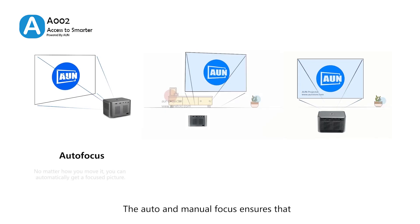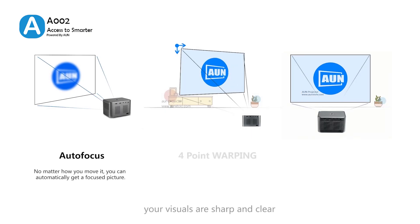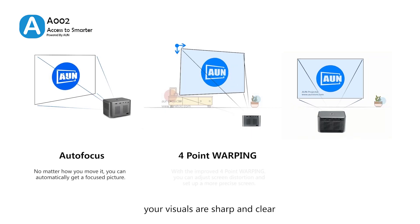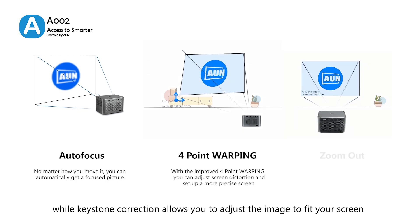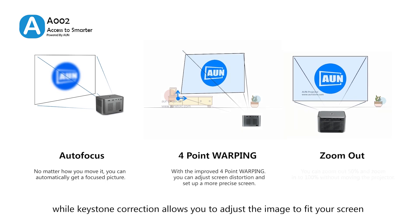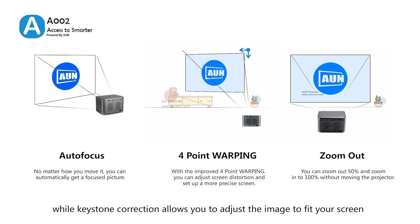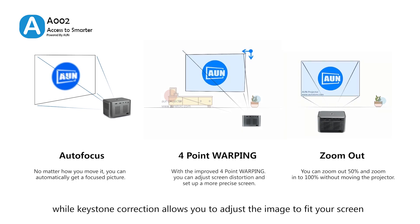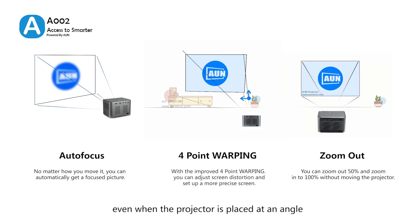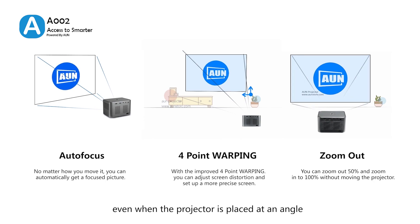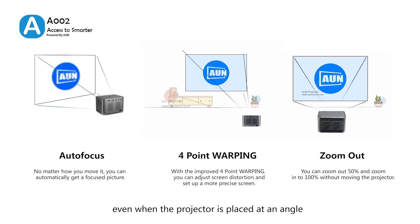The auto and manual focus ensures that your visuals are sharp and clear, while keystone correction allows you to adjust the image to fit your screen, even when the projector is placed at an angle.